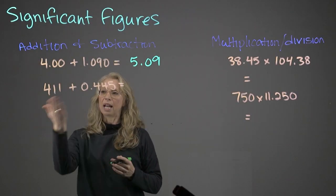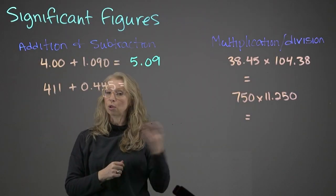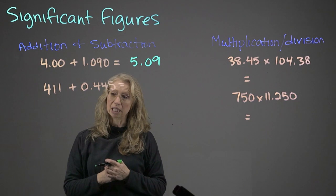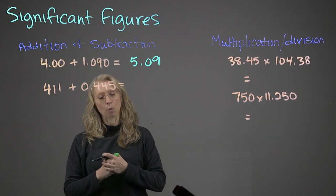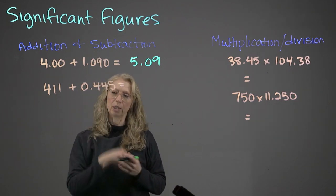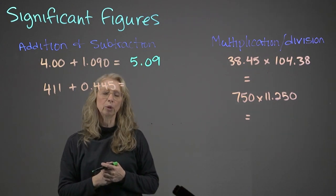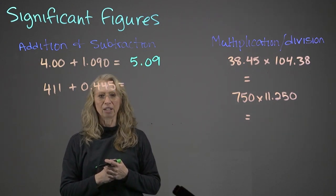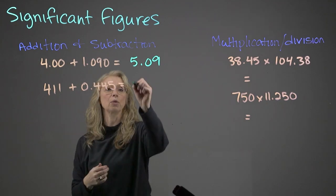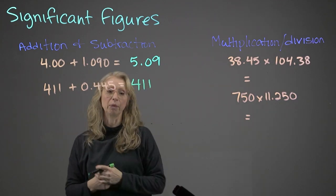Now our next example, we have 411, which is a whole number. We don't have any decimal places. And we have a very small number that is decimal places only, so three decimal places. So if we take into consideration the rule, we have to have an answer that has no decimal places. So in this case, our answer would be 411.